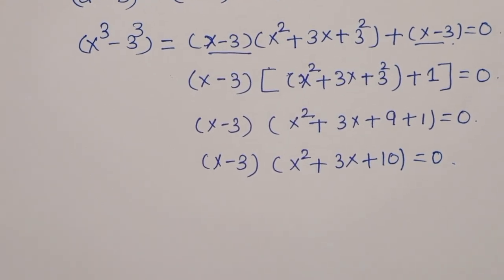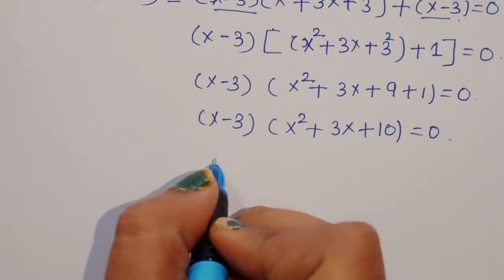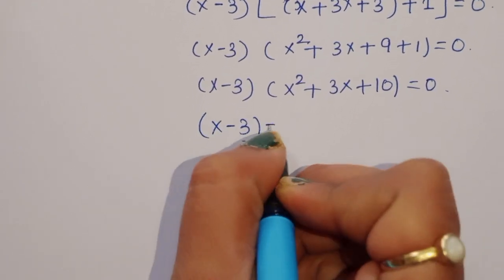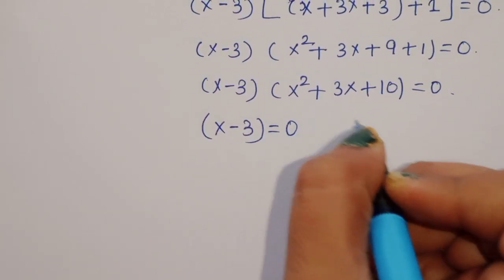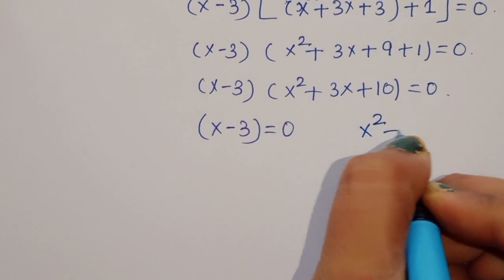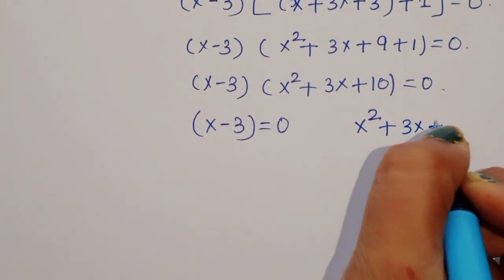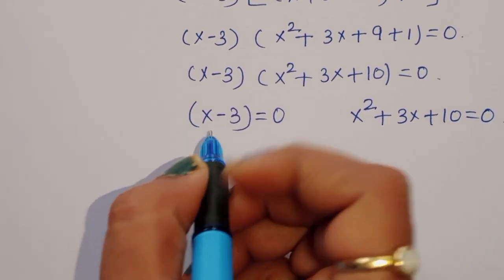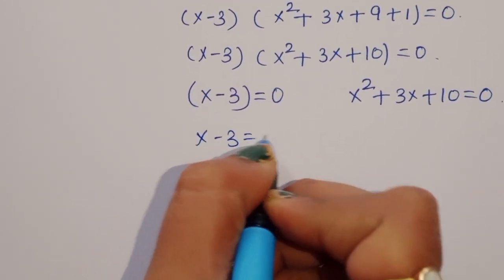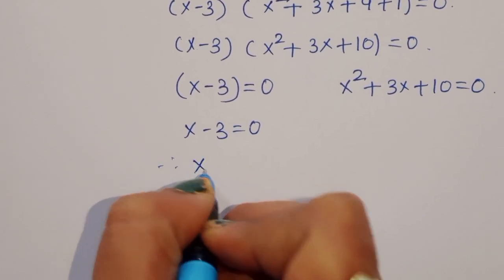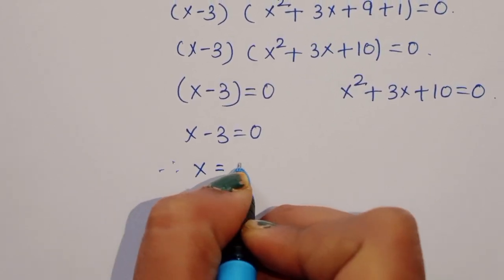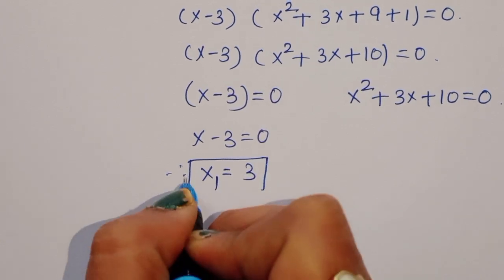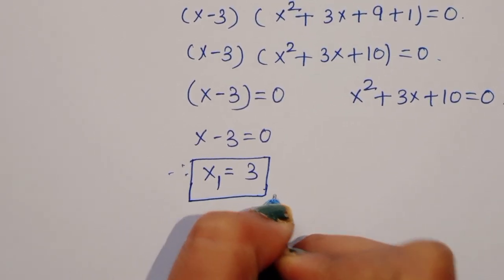Now we have two cases. The first one is x − 3 = 0, and the next one is x² + 3x + 10 = 0. From x − 3 = 0, we get x = 3. So the first solution is x₁ = 3.